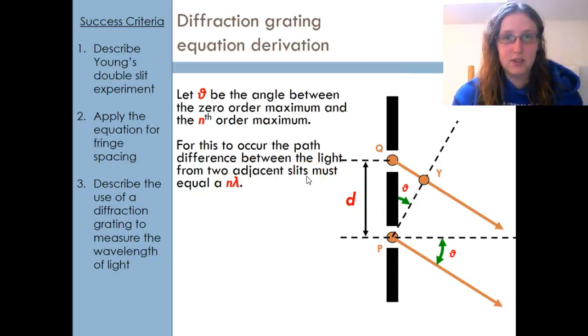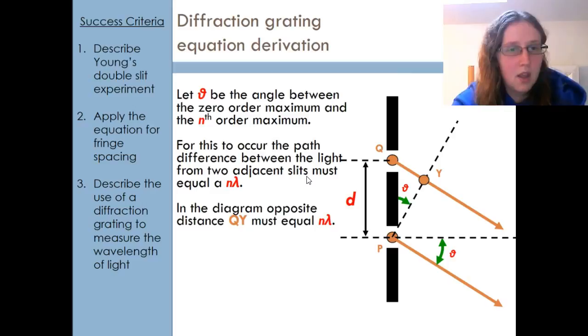The number of wavelengths that that path difference is must be equal to the beam order. If it was just one wavelength difference, that would be the first order beam; if it was two, the second, and so on. Looking at the way I've drawn this, this is my zeroth order, this is my beam, this is my angle. If I put a right angle triangle between these two adjacent slits and their light beams, I find that I should have theta here as well, just like similar triangles. My path difference must be this distance here, because afterwards they must have traveled the same distance.